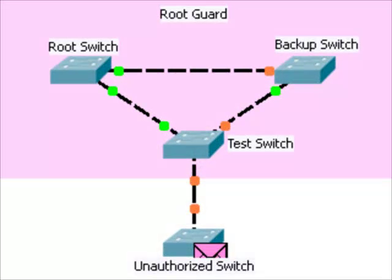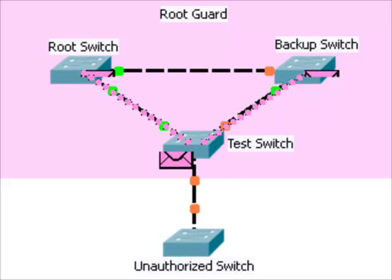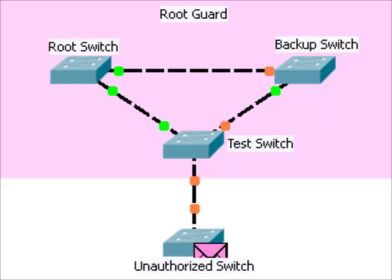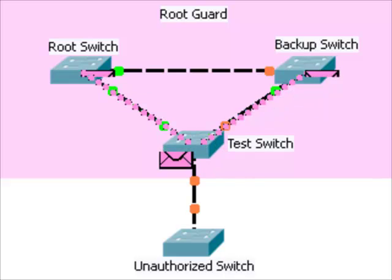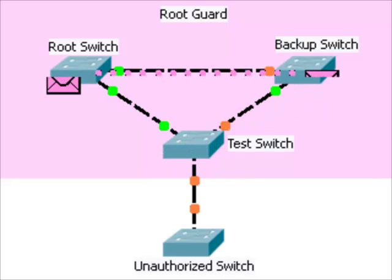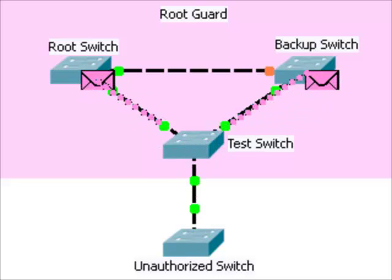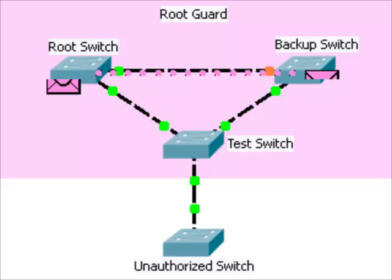We have been watching BPDUs coming from the root switch to the backup switch and to the test switch. Now let's turn on the unauthorized switch to view how it takes over the spanning tree topology by making itself the root switch. Notice that the BPDUs are now originating from the unauthorized switch and not from the root switch anymore. This has caused a change in the spanning tree topology.